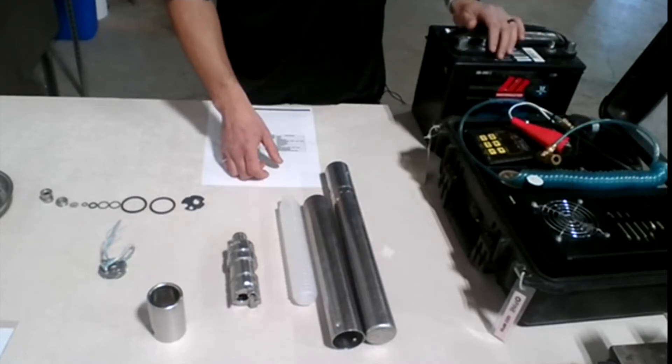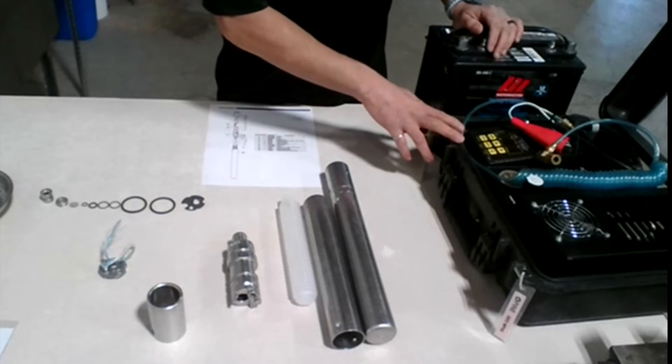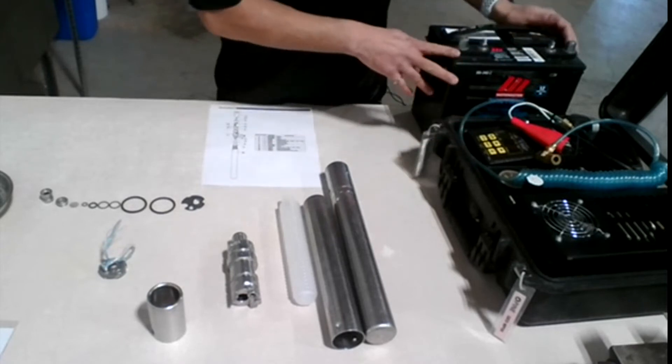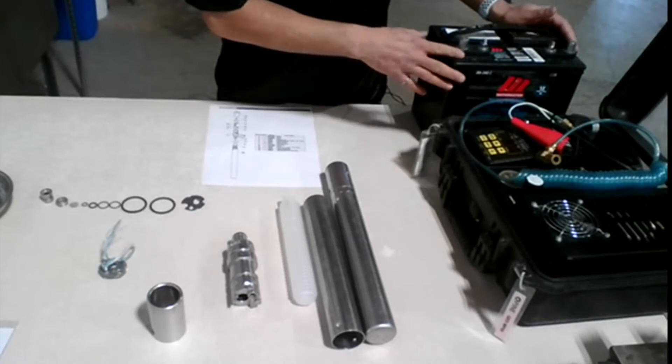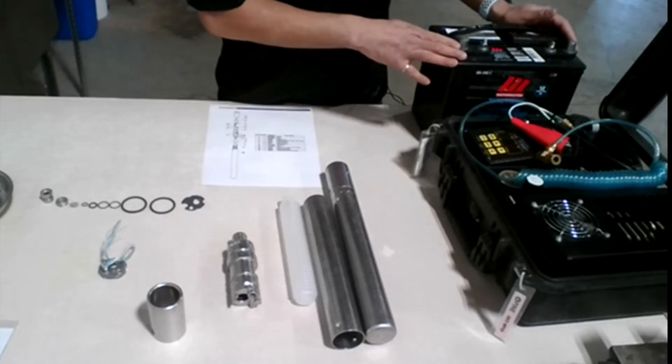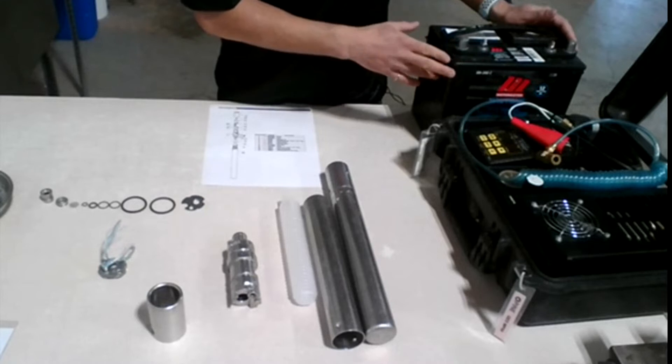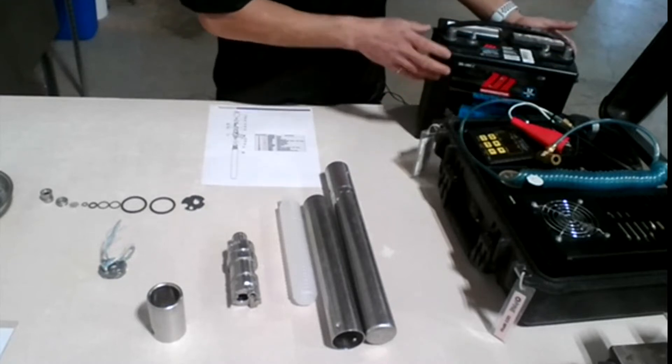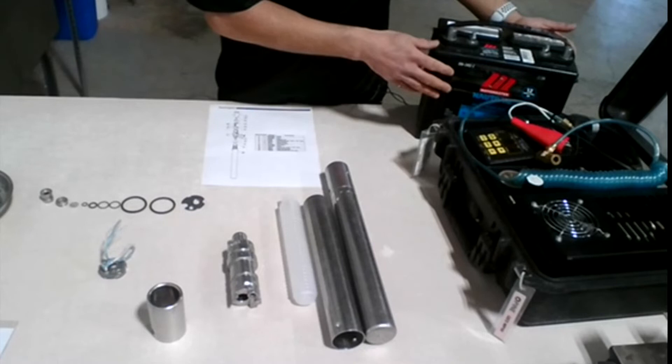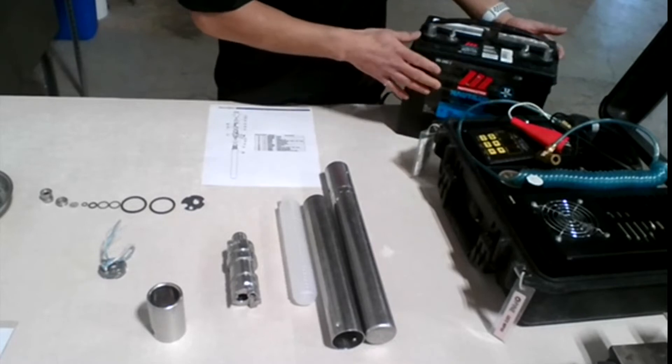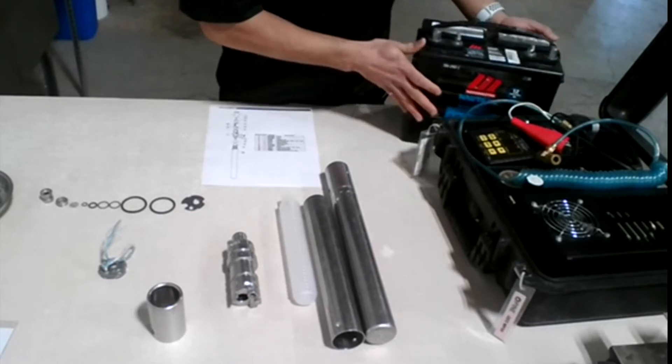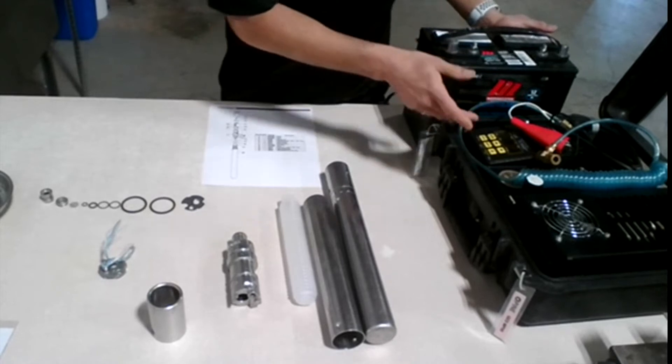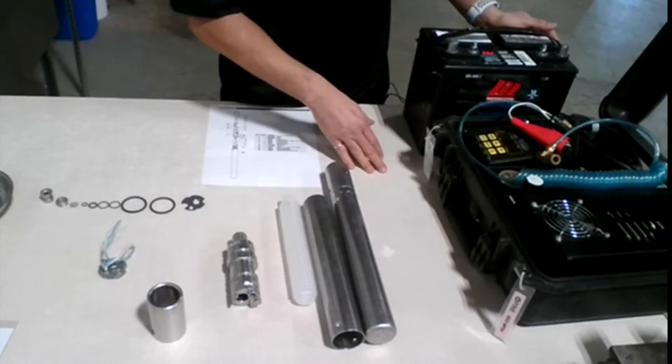And also to operate the compressor, you need a deep cycle marine battery is recommended. You can use a smaller one, but it's highly recommended to use a deep cycle, 12 volt deep cycle battery. It's just like the battery in your car, so we send that one out also to activate and operate the controller and the compressor.